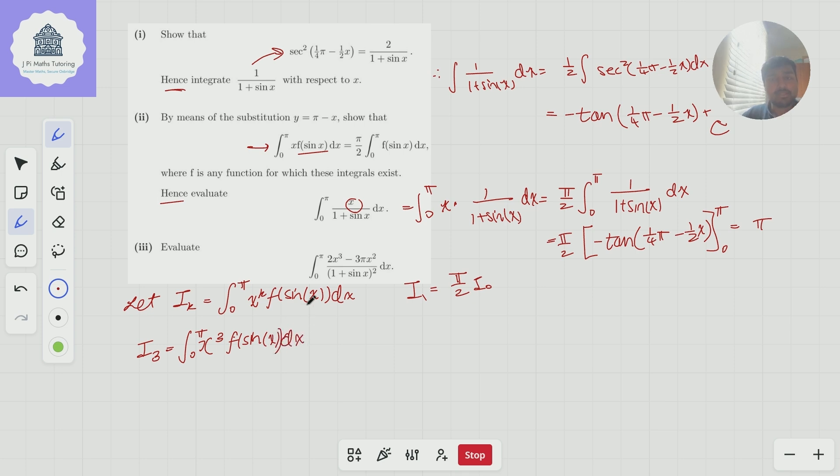So i₃ is the integral from 0 to π of x cubed f of sine x dx. And now what I want to do is do a substitution. So I'm going to do the substitution u equals pi minus x, or y equals pi minus x, same as before. And I'm going to skip a couple of steps here. And you're going to get the integral from 0 to π of pi minus y cubed f of sine of y dy.